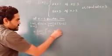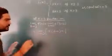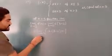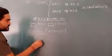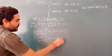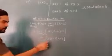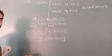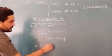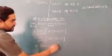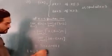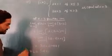So the left hand limit becomes: limit h tends to 0 of a(3 − h) + 1, which gives 3a − ah + 1. Putting h = 0, we get 3a − a×0 + 1. Therefore, the left hand limit is 3a + 1.